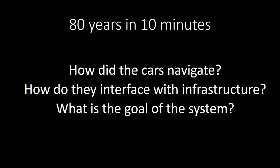For each of the four time periods, I'm going to try to answer three questions: first, how did the cars themselves navigate — how do they actually work? Two, how do they interface with infrastructure — what's the relationship between the vehicle and the infrastructure? And three, what were the goals of the people designing these automated vehicles?